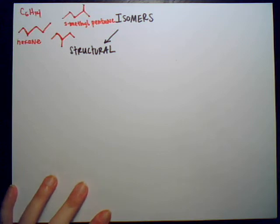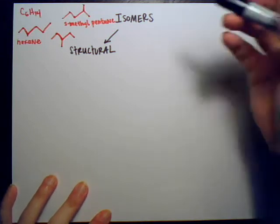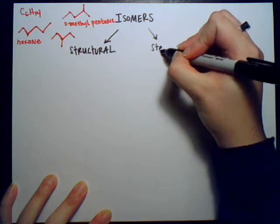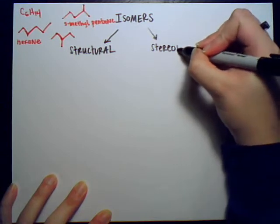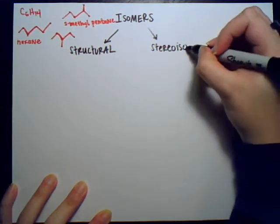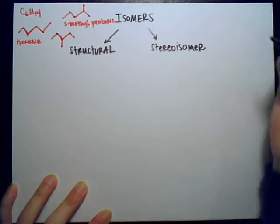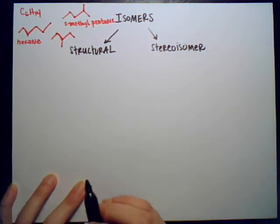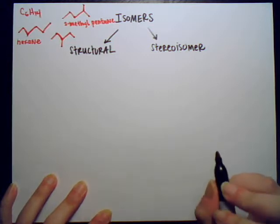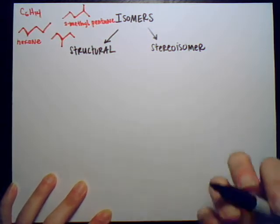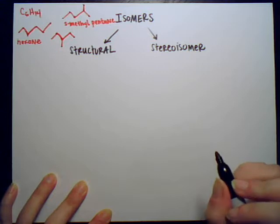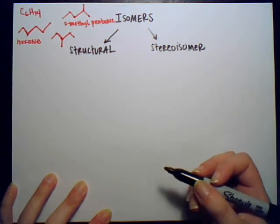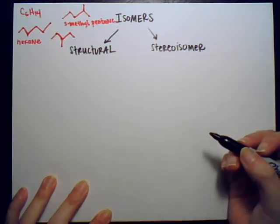The other kind of isomer is a stereoisomer. Stereoisomers have the same molecular formula and they are connected in the same fashion, but they differ spatially. There are different ways in which they can differ spatially as well, and I'm going to go over the subcategories right now.